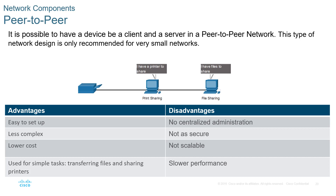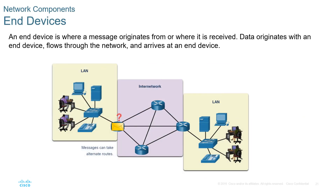We keep saying hosts or end-devices. What exactly are the devices in between a network that connect multiple end-devices? The formal definition of end-device or host is where a message originates from or where it's received. Data originating with an end-device will flow through the network and arrive at a separate end-device. Here we have an internetwork — a network of networks — that takes something from a local network, a LAN, and allows for communication to a separate LAN regardless of geographical location.